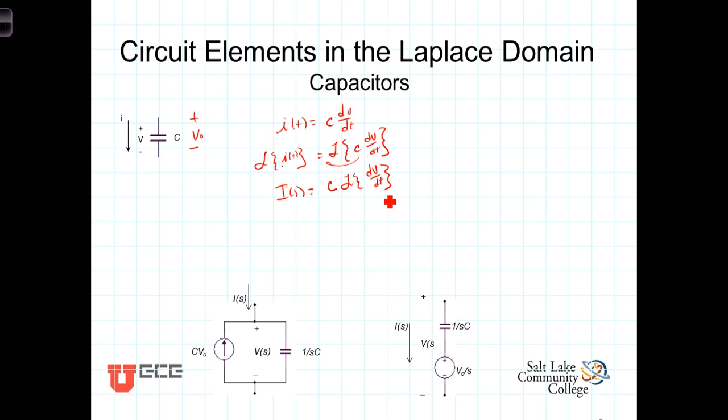And once again, we recall the operational transform of the derivative. On the right-hand side we have then C times Laplace transform of the derivative. That's just s*V(s) minus v at 0 minus.